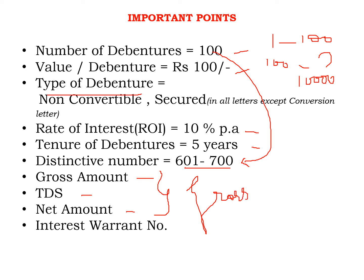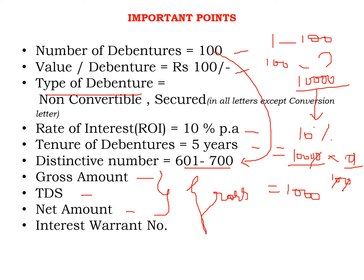10,000 is your total investment. The company is paying interest at 10%, so 10,000 × 10% = Rs. 1,000. That is the gross amount — the amount received without any deduction. Now, TDS, that means tax deducted at source, is applicable on higher amounts. For such lesser amounts, TDS is not deducted. So TDS deduction would be zero. Gross minus TDS equals net. Here gross is 1,000, TDS is zero, so net amount is 1,000. For example, if TDS were 100, net would be 900.